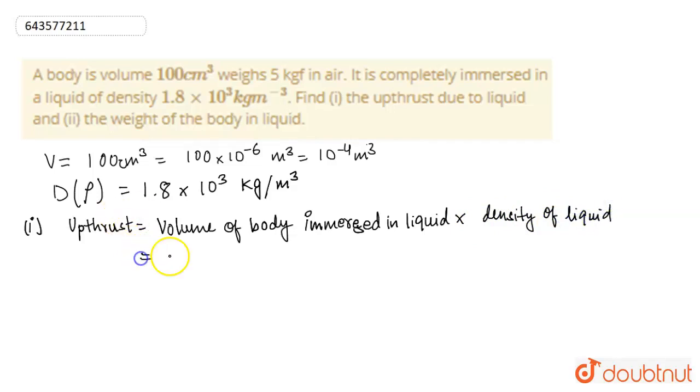So, this is the upthrust force which is equal to 10⁻⁴ × 1.8 × 10³ which can be written as 0.18 kgf. So, this is the upthrust force and this was already given in the question and this was converted by us over here.